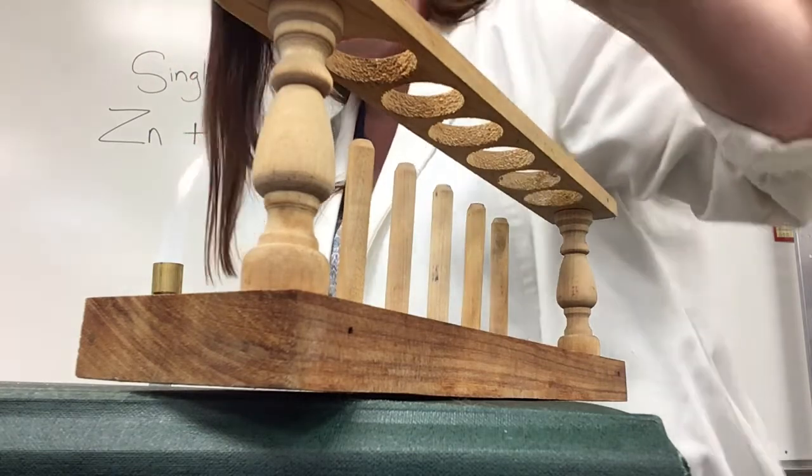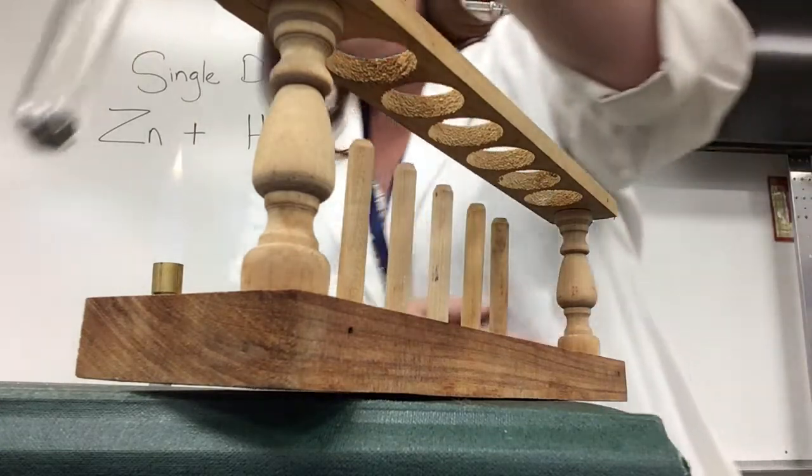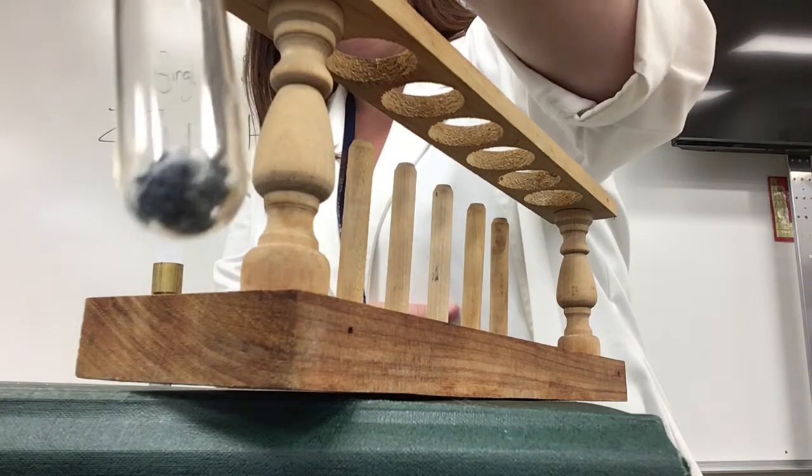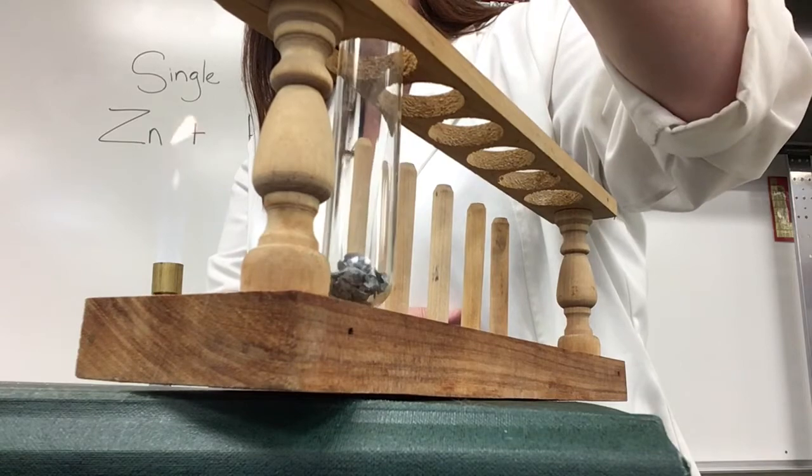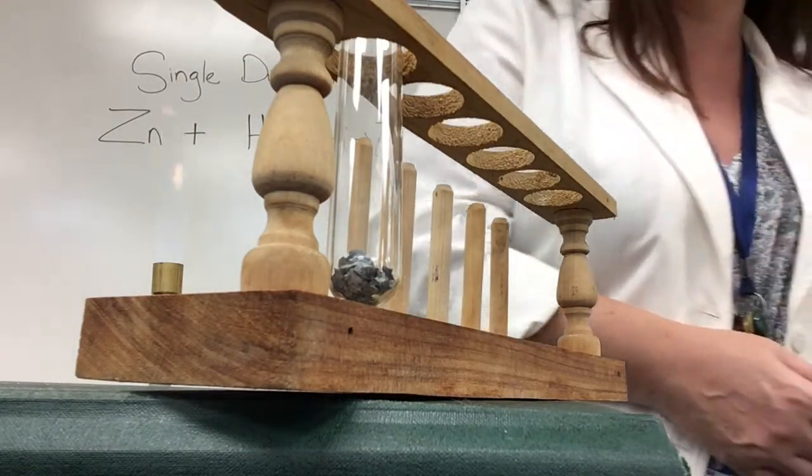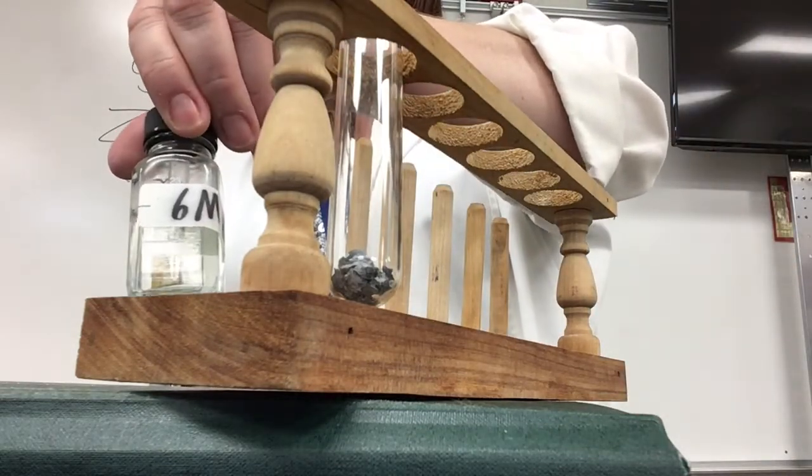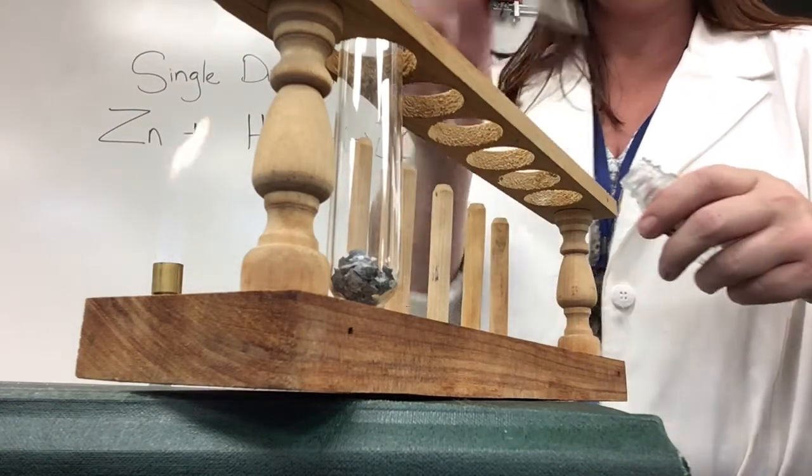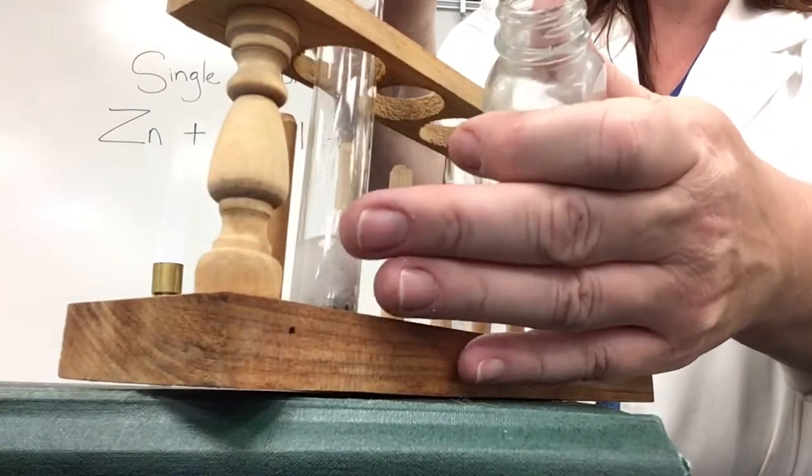So we're going to put a little bit of this mossy zinc into our test tube like so, and I'm actually going to add an acid to this. So I'm going to put it in my holder there while I get my acid. The acid that we're using is HCl, that is hydrochloric acid. This is a six molar concentration so it's going to be pretty strong. I'll put several squirts and I can see that it's already starting to bubble.